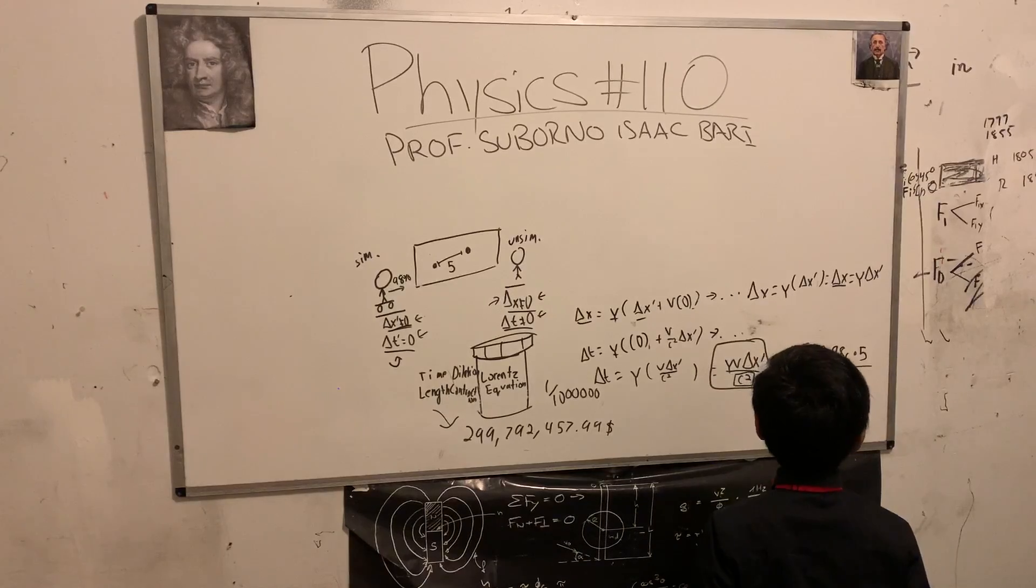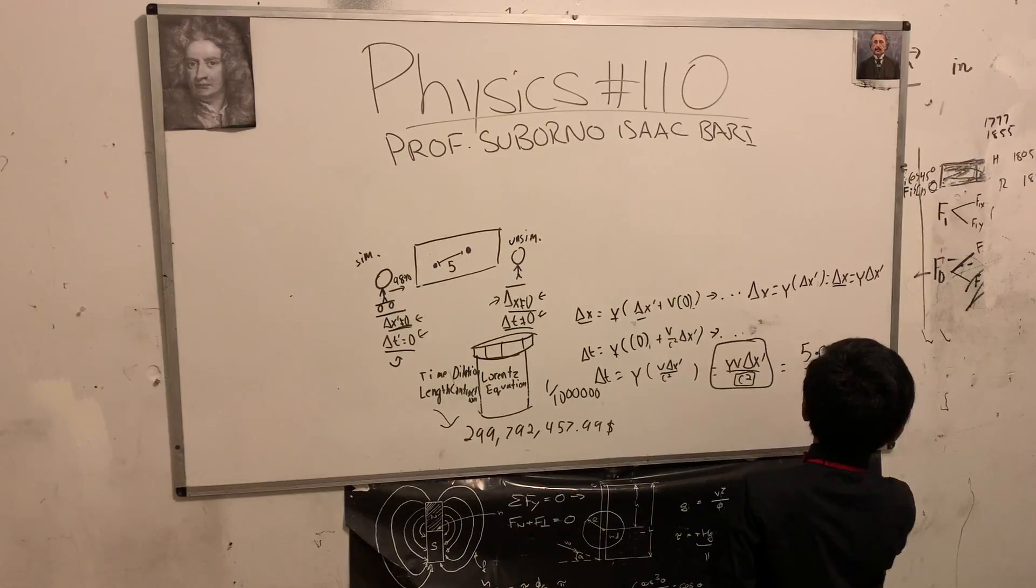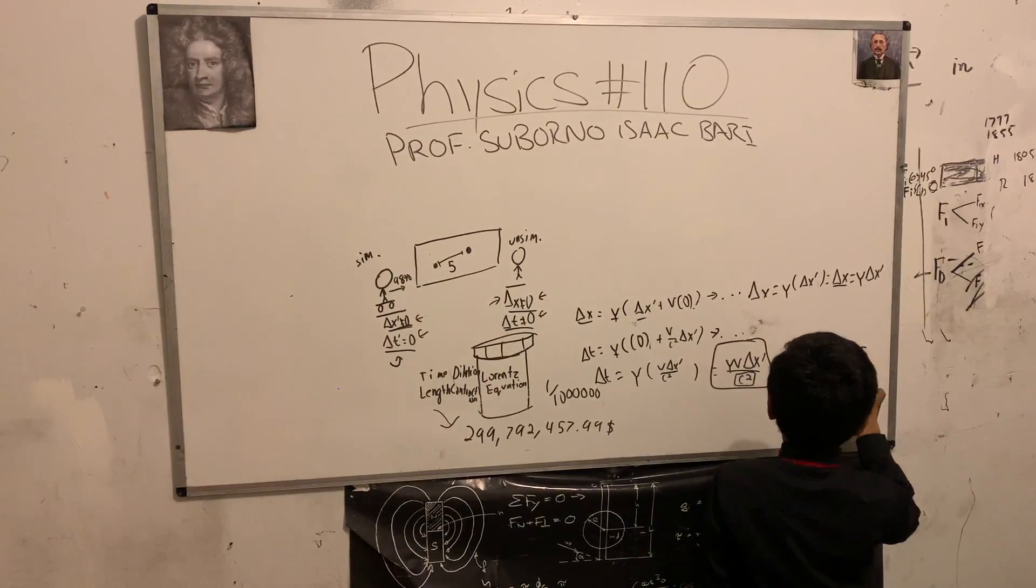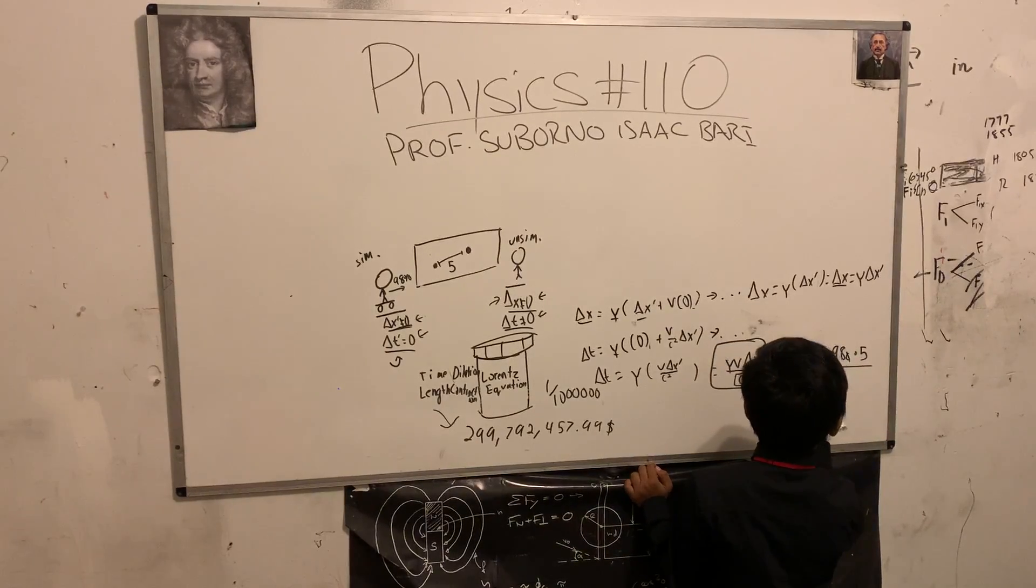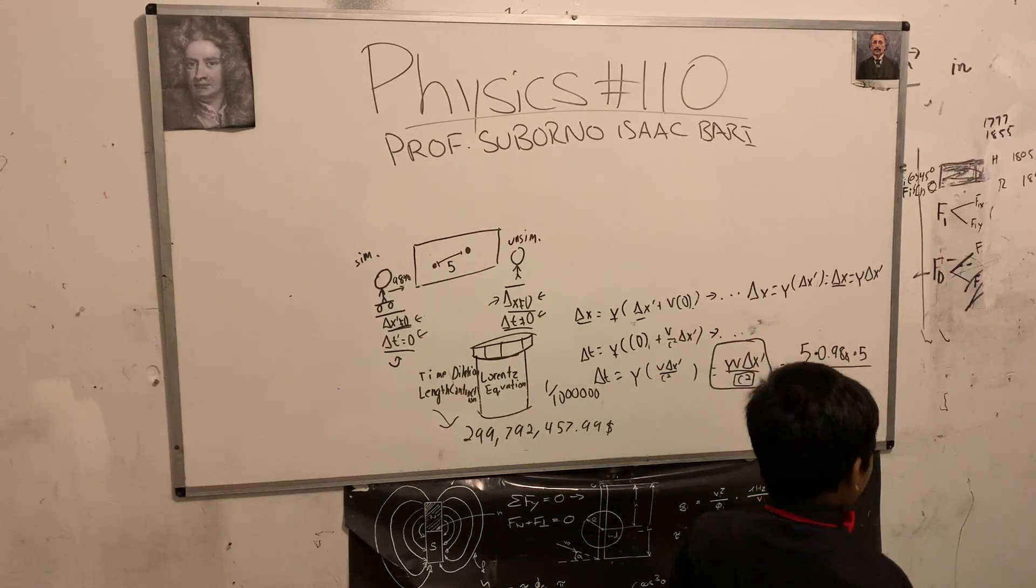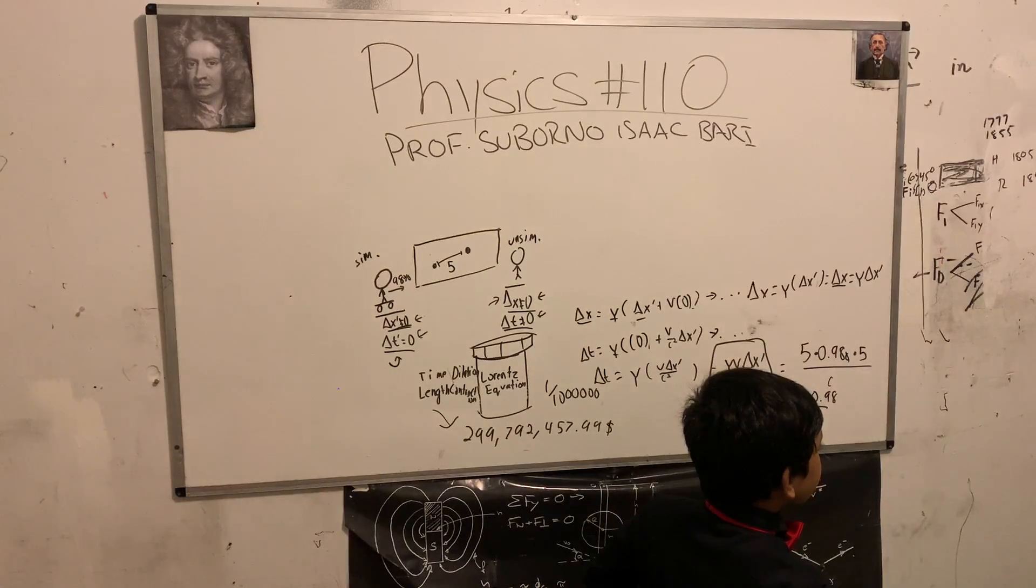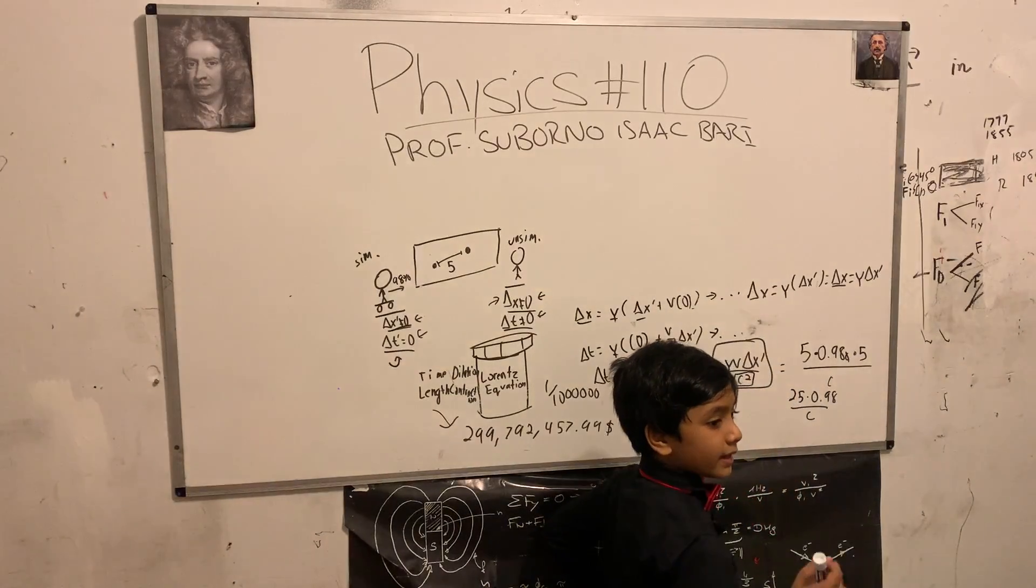So 5 is now - we divide that monstrosity by c squared, which is not gonna be easy to deal with. Now first of all we can cancel these out to get 5 times 25 times 0.98 over c.